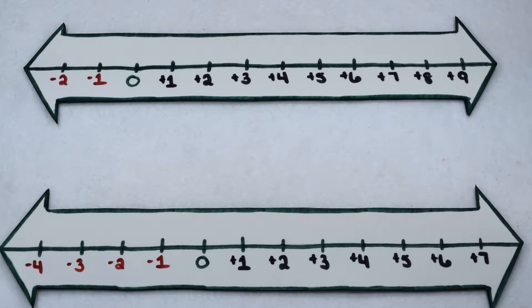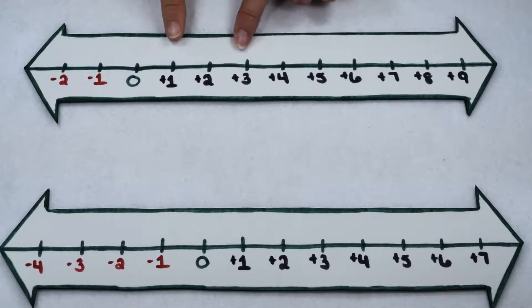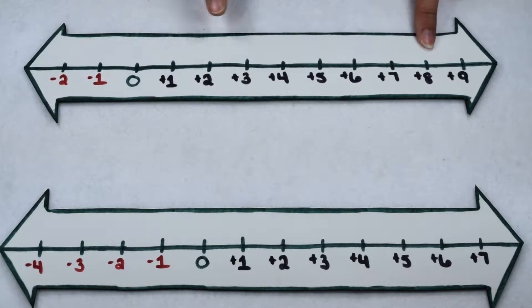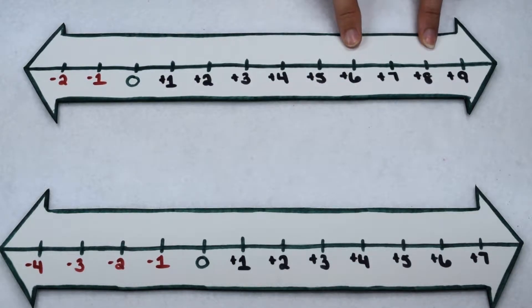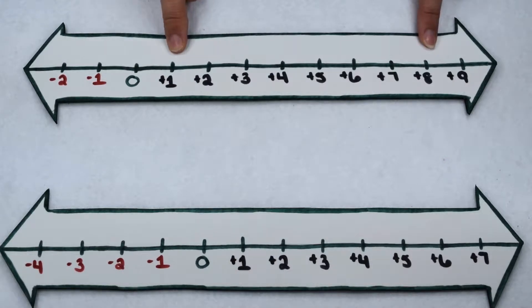When we first learn to subtract, a lot of us probably thought of it as simply taking away. When we illustrate it out on a number line, instead of thinking of it as taking away, we can think of subtracting as telling us to go the opposite direction from which the number indicates.